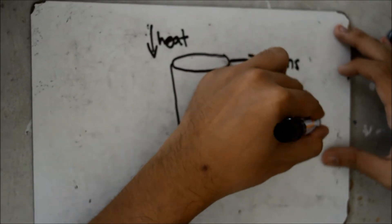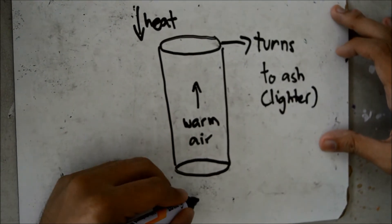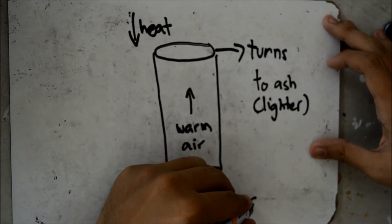Furthermore, when the tea bag burns right at the bottom, it turns into ashes. It becomes so light that it gets swept up in the convection current.